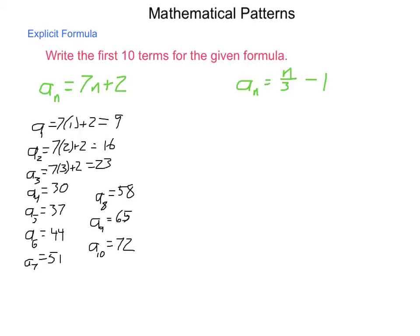Now, let's look at the second one. a sub n equals n divided by 3 minus 1. So we'll go through the same process. a sub 1 is 1 divided by 3 minus 1, which is negative 2 thirds.